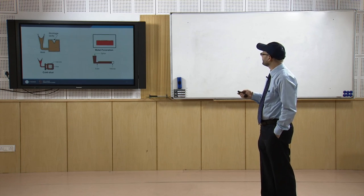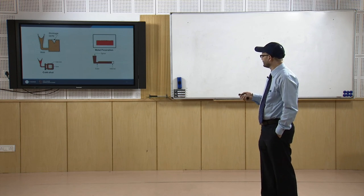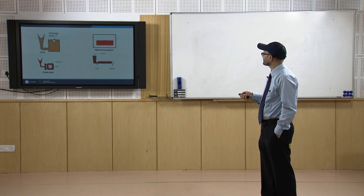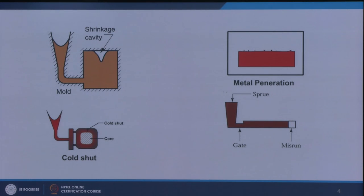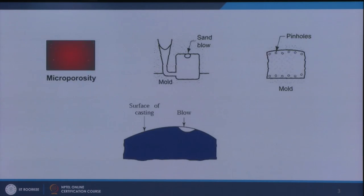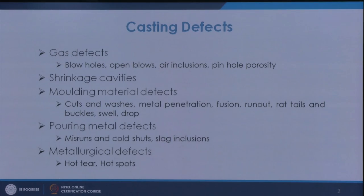A shrinkage cavity will look like this normal cavity shown — that has to be supplied with extra metal so that there is no shrinkage defect.